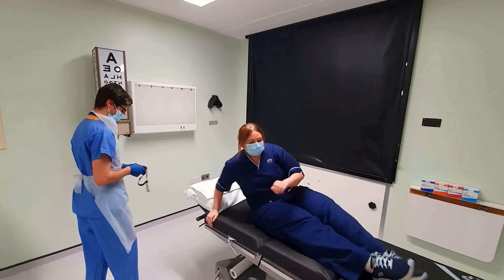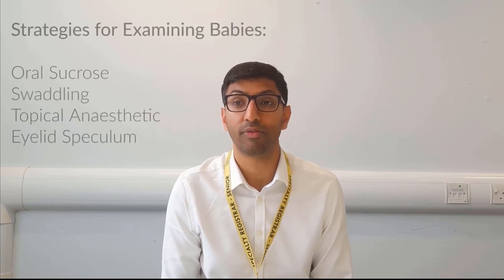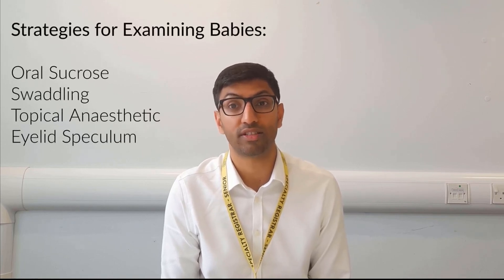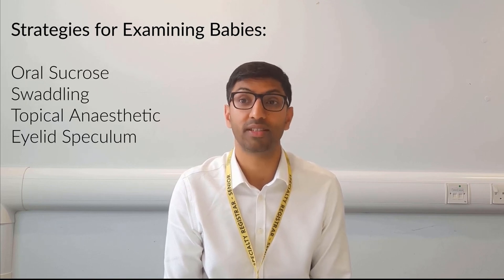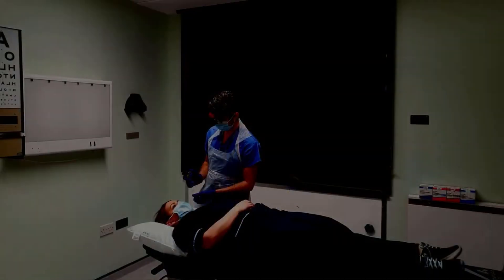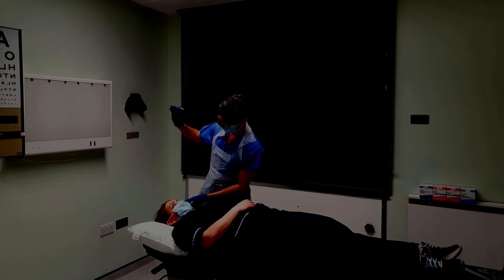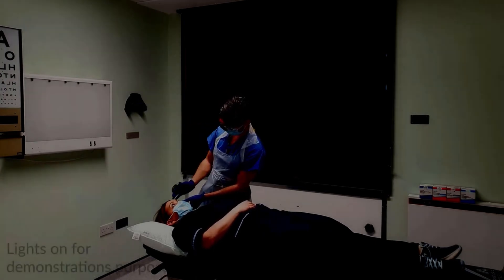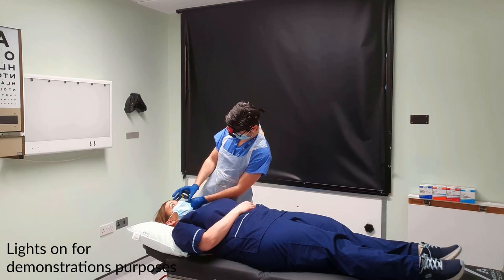The patient should be examined ideally lying supine or in a reclining chair. Examining a baby may be challenging and you should consider using oral sucrose before the examination, swaddling the child, instilling local anaesthetic drops, or using a speculum to facilitate a thorough examination. When the patient is dilated, the room should be dimly lit to maximise contrast. You should examine the patient in a quiet environment to allow a comfortable examination.